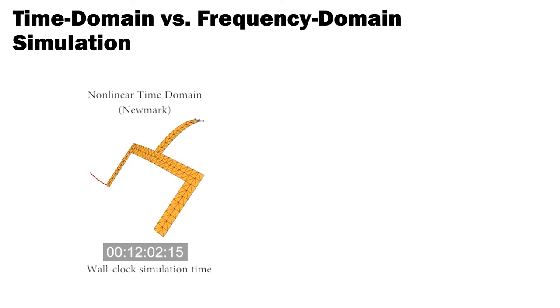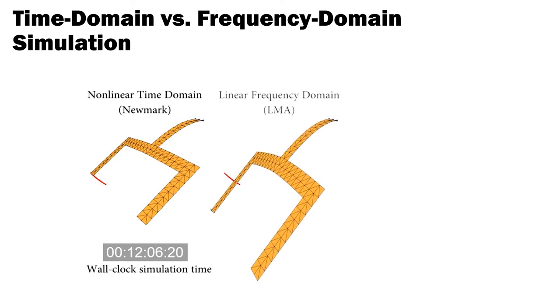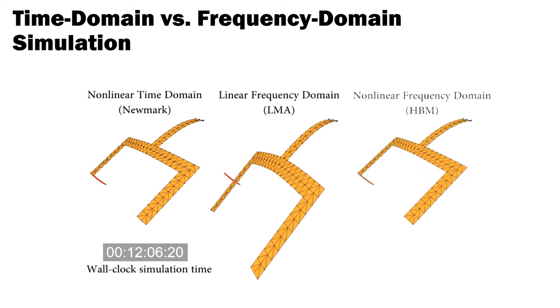By contrast, linear modal analysis returns steady state motion almost immediately, but the linearization leads to large deformations and fails to capture the characteristics of the ground truth motion. So to summarize, whereas time domain methods are very slow and linear frequency space approaches are very inaccurate, HBM allows us to efficiently compute accurate steady state solutions for nonlinear mechanical systems. And this is why we use it as a basis for our computational design method that I'll describe next.